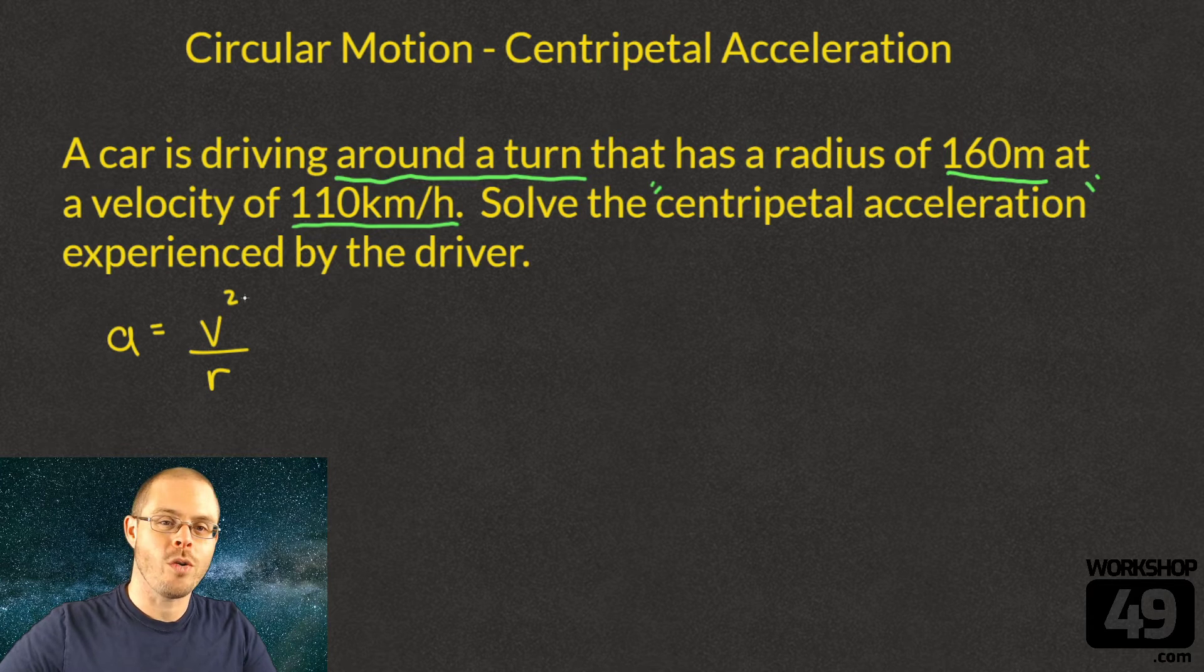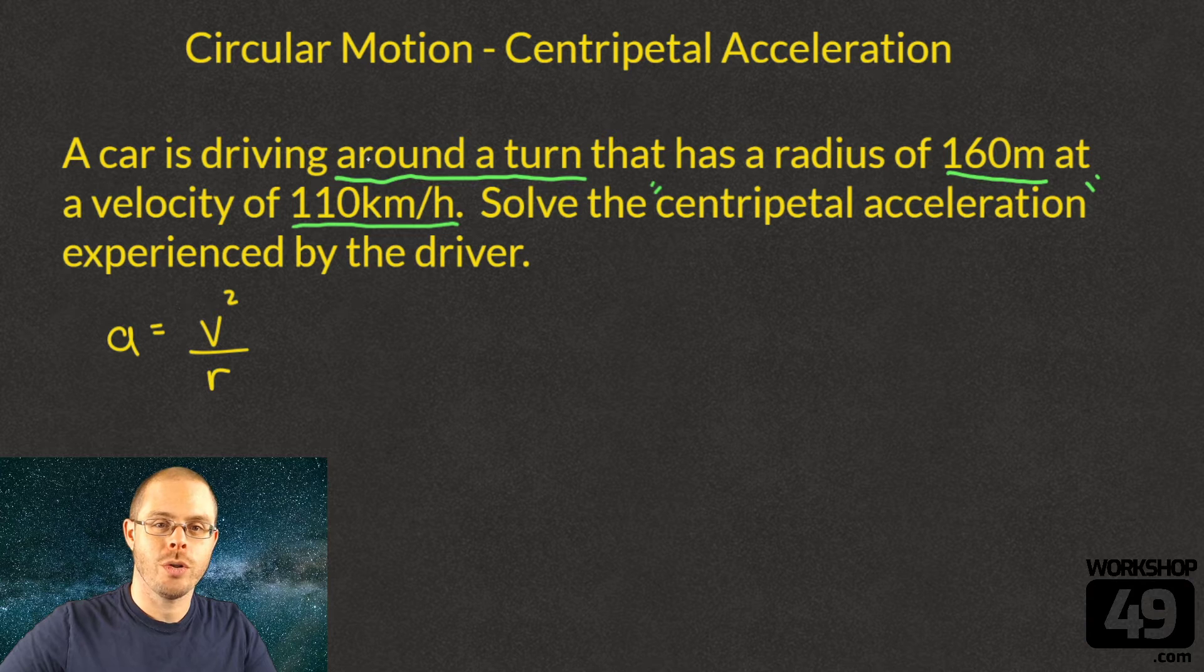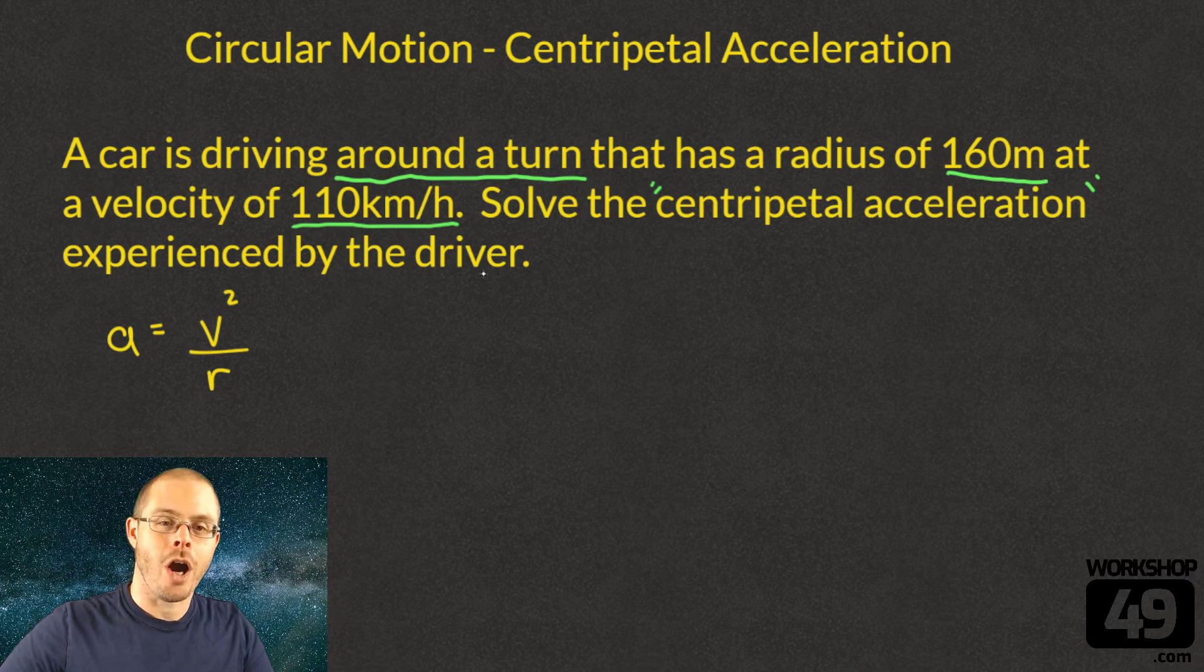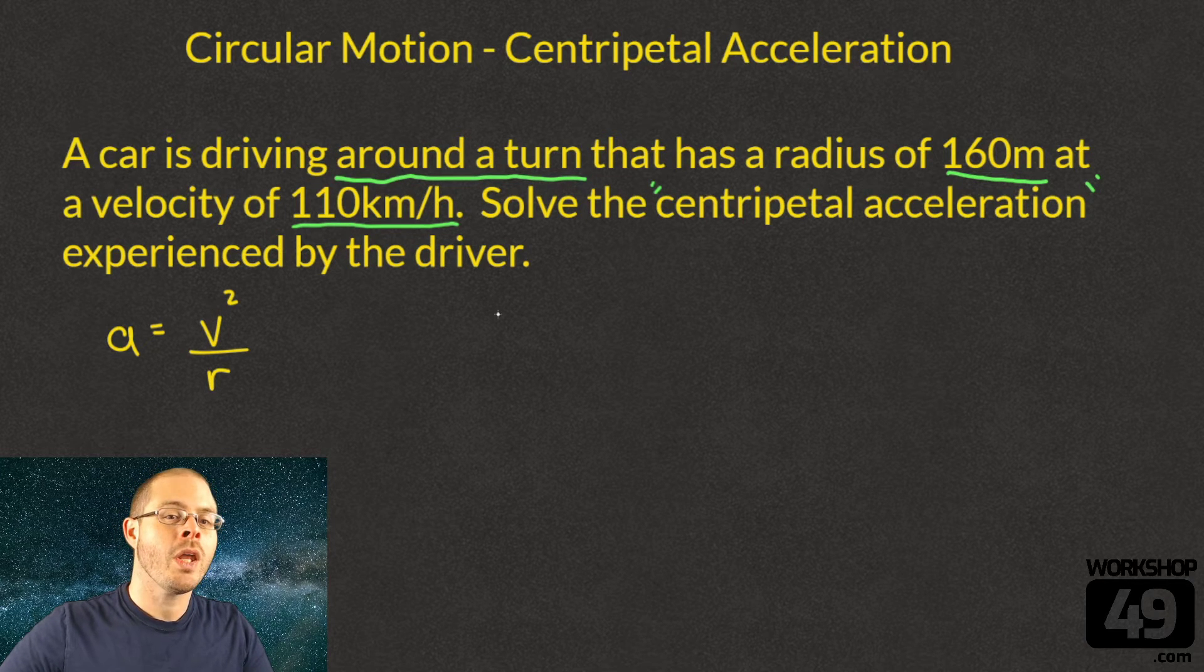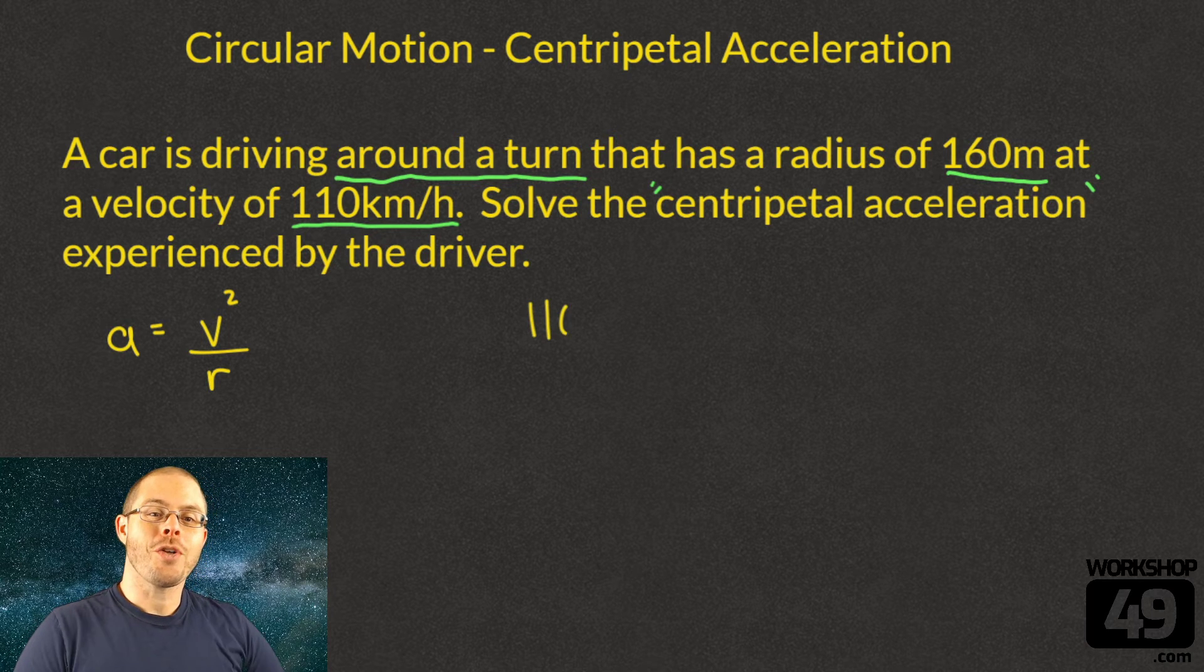The equation that we're going to be using is a = v²/r. This is our centripetal acceleration equation where v is the velocity and r is the radius of the turn. Our velocity does have to be in meters per second.